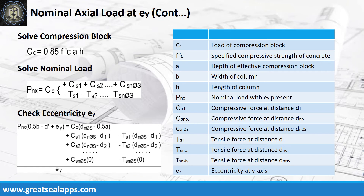Continuing at the y-axis, solve the force of the compression block and sum up all the steel forces together with the compression block to get the nominal load of the column section. Perform a final check of eccentricity from the given computations.